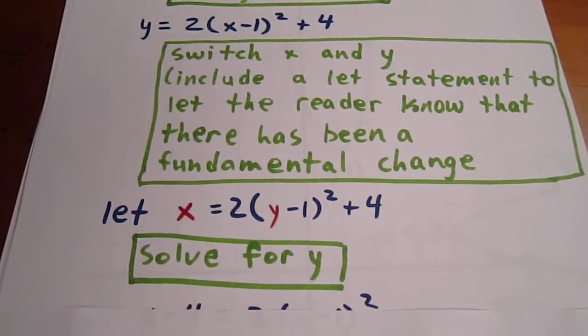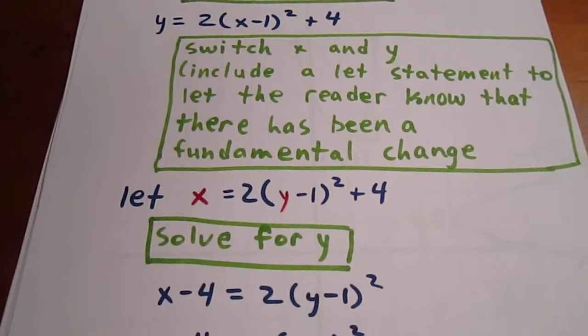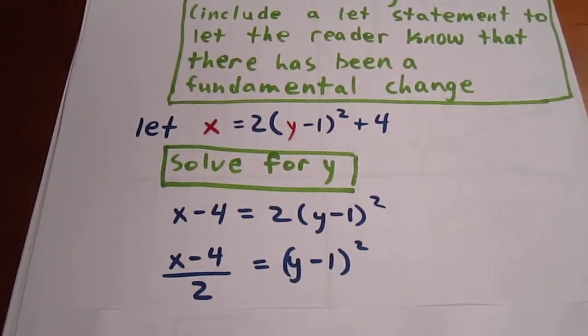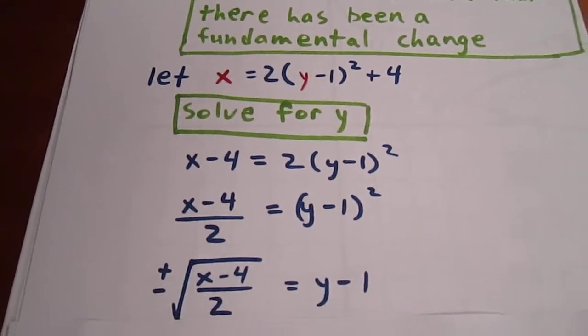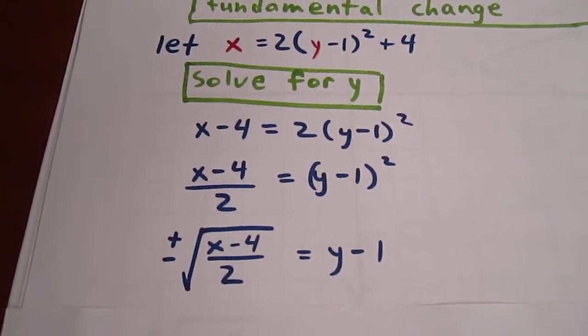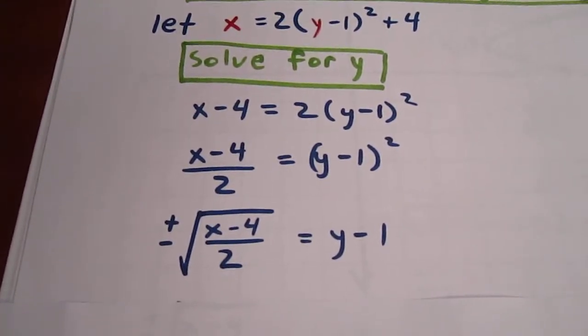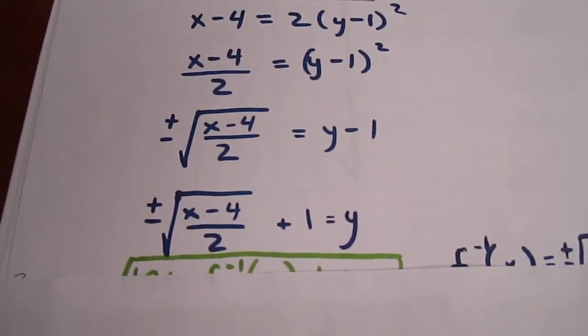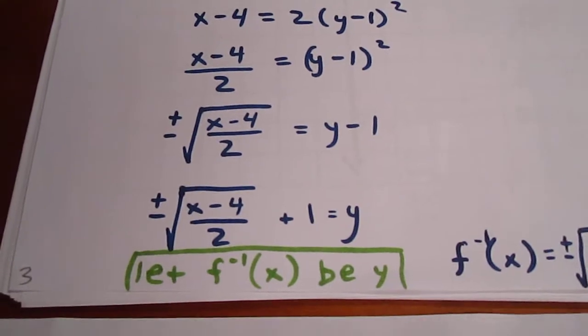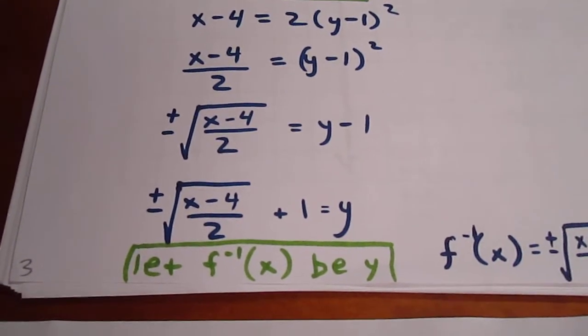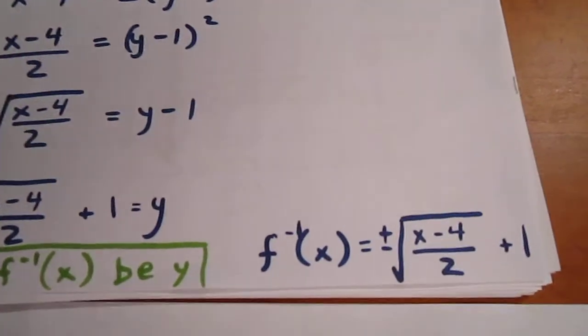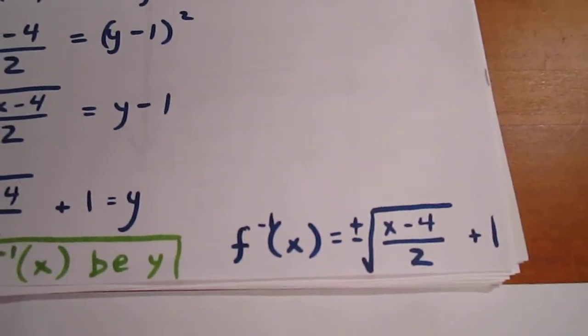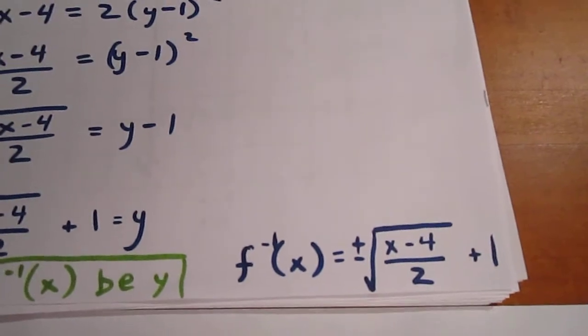We're now going to solve for y. We remember our order of operations. We subtract 4 first, then we divide both sides by 2. Then we take the positive and negative square root of the left-hand side and the right-hand side. We then add 1 to both sides and we remember that y is f of x, sorry, f inverse of x. So we can say that f inverse of x equals plus or minus the quantity x minus 4 all over 2 and then plus 1.